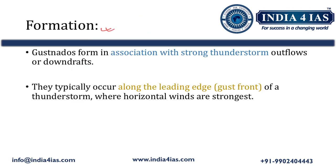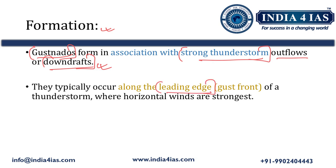Coming to the formation of Gustanados, they form in association with strong thunderstorm outflows or downbursts. They typically occur along the leading edge — that is, the gust front — of a thunderstorm, where horizontal wind speeds are strongest. It is at these locations that Gustanados form.